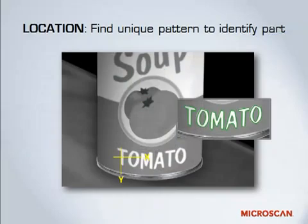Additionally, you can find a unique pattern and use that to identify a part. An example you can see here is a can of soup. The vision system has been trained to look for a pattern on the soup — in this case, the portion of the label that says 'tomato' on it. We can use that pattern to verify that we do, in fact, have the right soup going down the line.